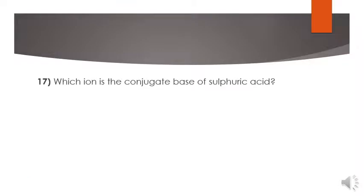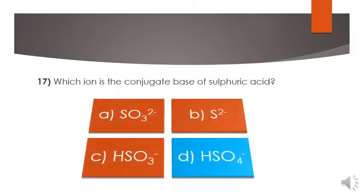MCQ number 17: which ion is the conjugate base of sulfuric acid? HSO4 negative is the conjugate base of sulfuric acid. D option is the correct option.